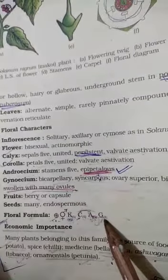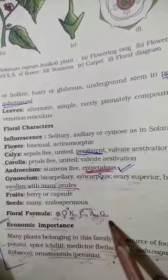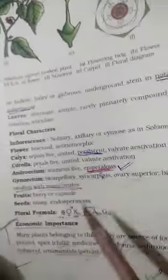Gynoecium is bicarpellary means two, syncarpous means bracket, and underline means superior. So this is about the family Solanaceae.